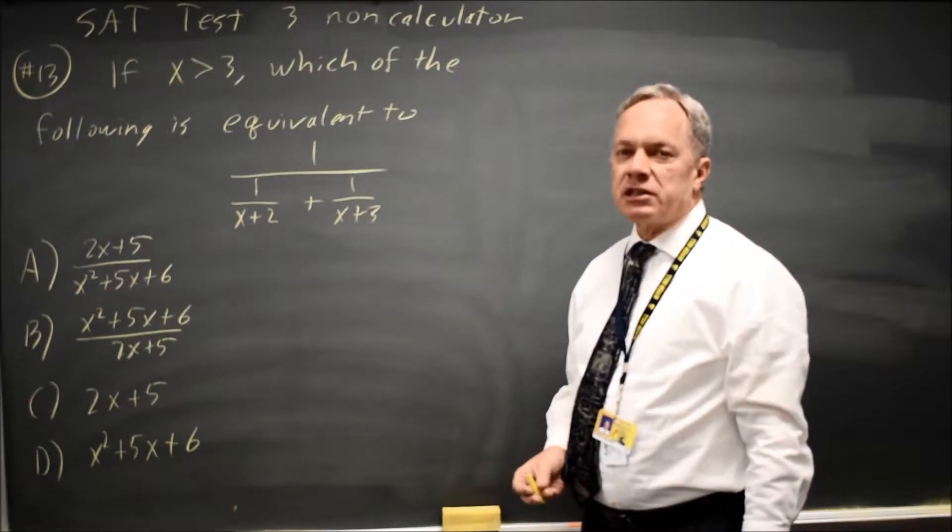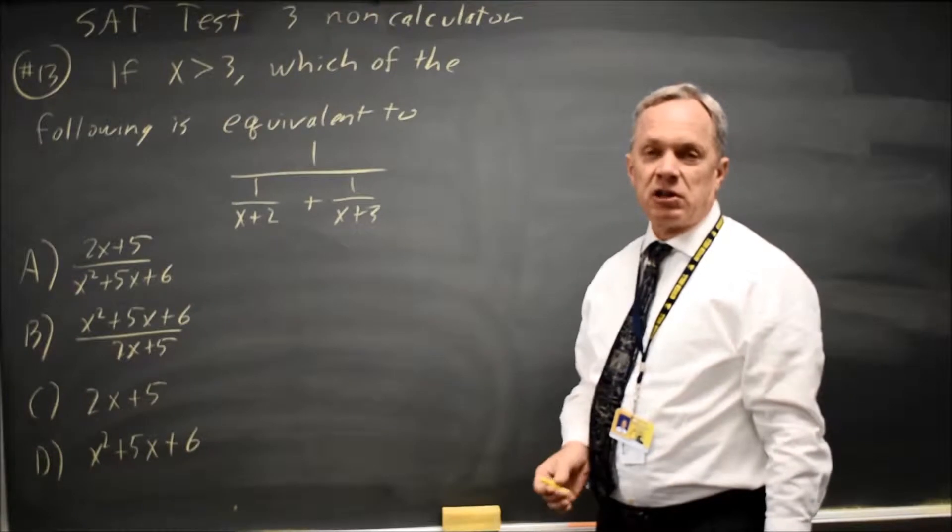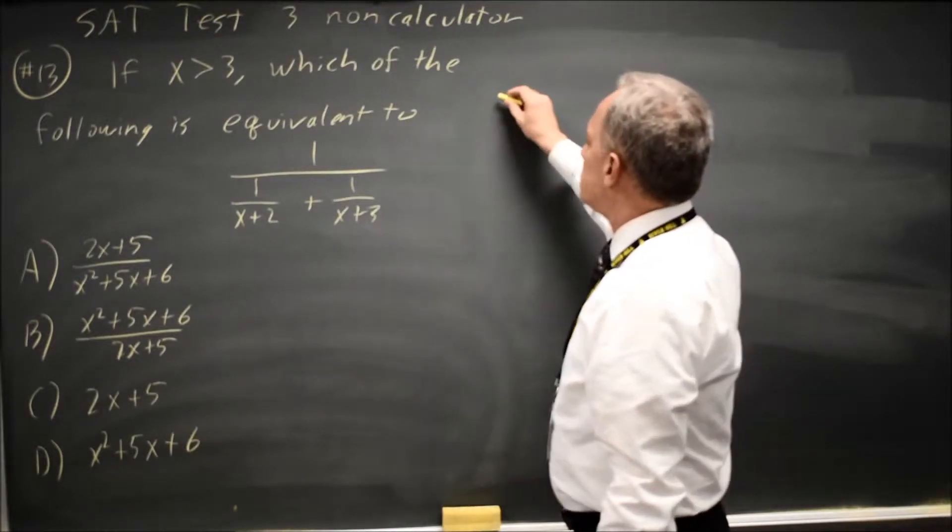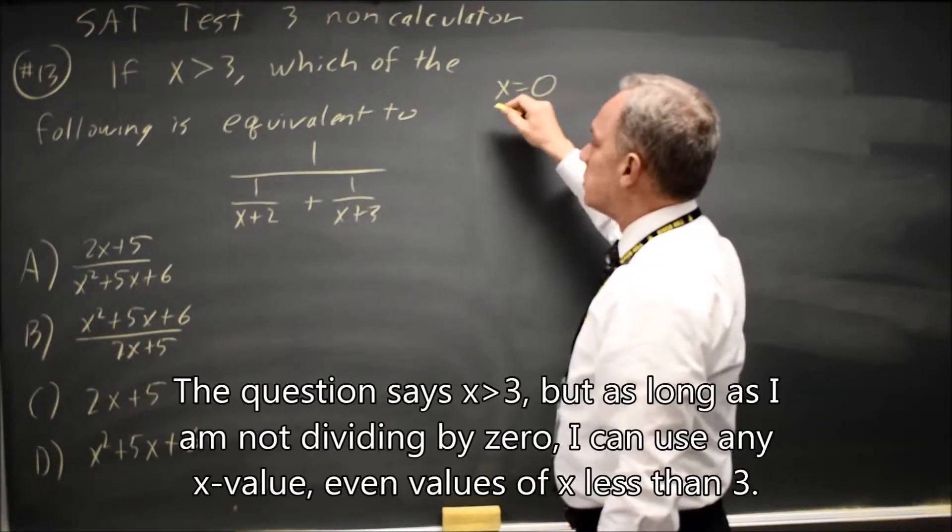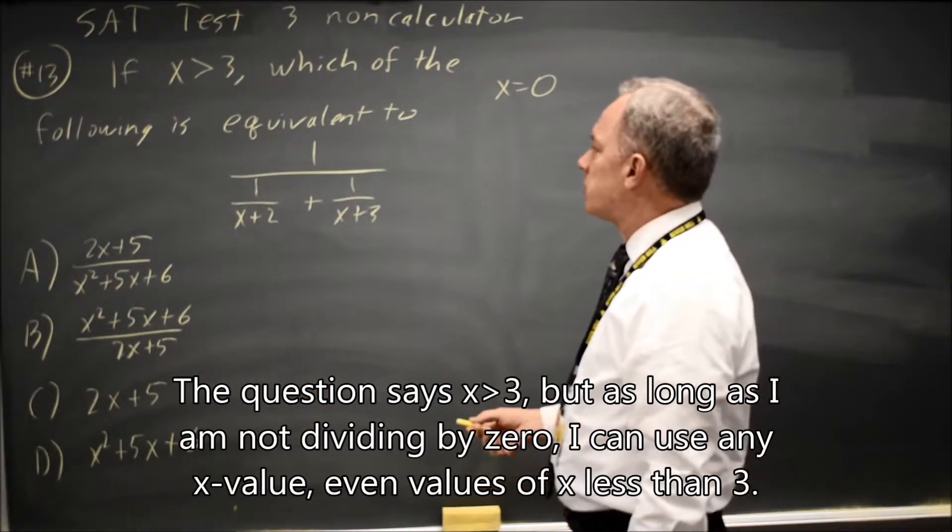There's two options to do this. First is, under time pressure for the SAT, if they're equivalent, they'll match for all x values, and I like to use x equals 0. If only one option matches at x equals 0, then that answer must be correct.